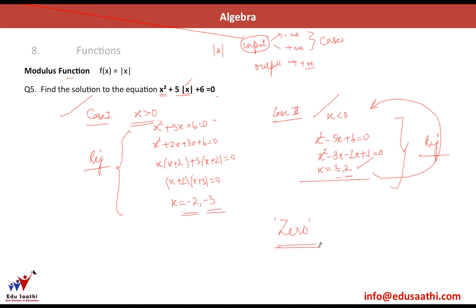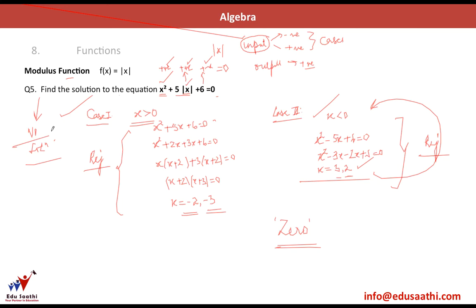Another way to see this: x² is always positive, 5|x| is always positive (since mod gives a positive output), and 6 is positive. Three positive numbers can never add up to give 0. So there is no solution to this equation.